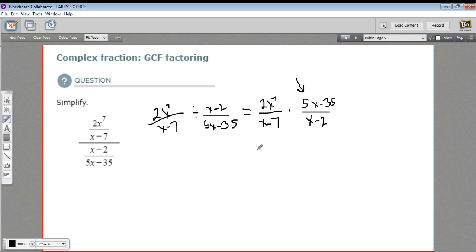And you'll notice I have an x minus 7 on the bottom. So let me rewrite this whole problem: 2x to the seventh over x minus 7.